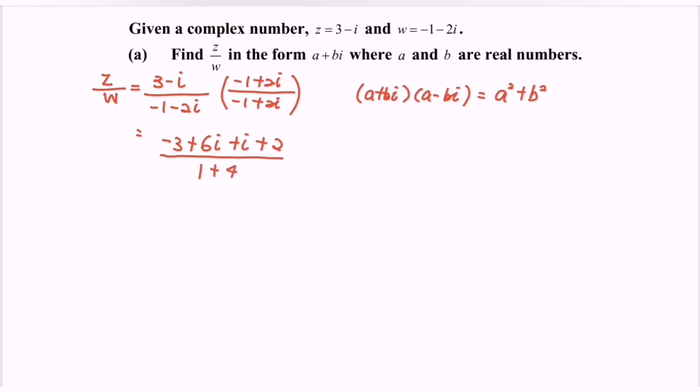Simplifying, we have (-1 + 7i)/5. Expressing this in the form a + bi with real and imaginary parts, we conclude: z/w = -1/5 + 7i/5.